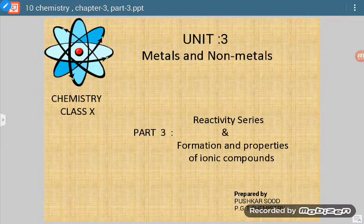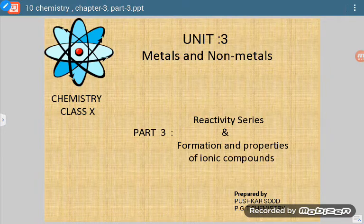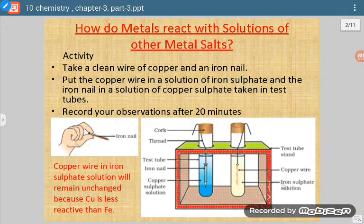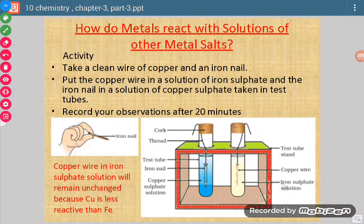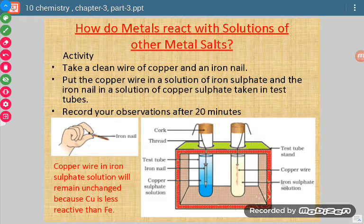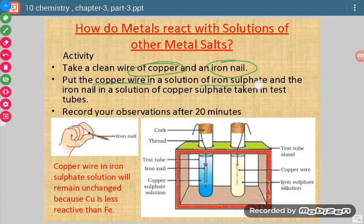On the basis of different properties of different metals with different compounds, we have made a reactivity series. We will also study how ionic compounds are formed and what their properties are. First of all, how do metals react with solutions of other metal salts? We take copper metal and iron metal — we put a copper metal wire in a solution of iron sulphate and an iron nail in the solution of copper sulphate.